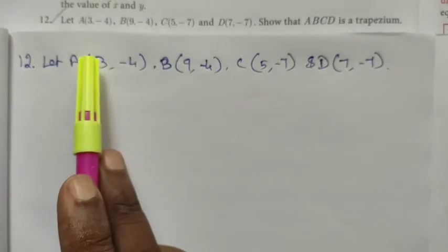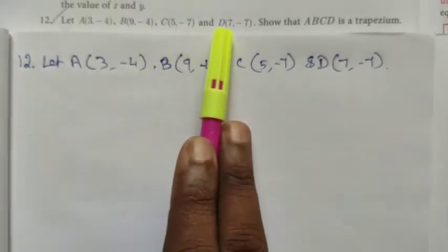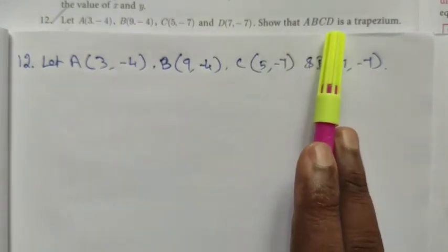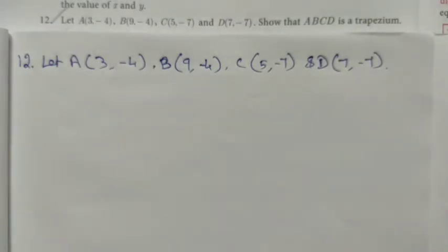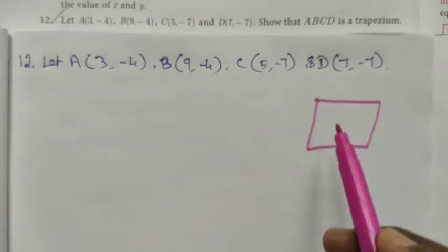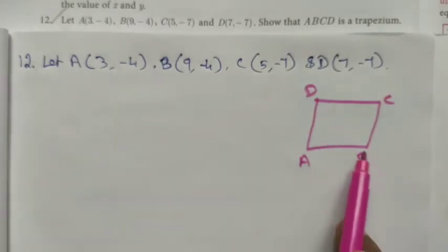Hi students, class 10, Exercise 5.2, question number 12. Let A, B, C, and D be given points. Show that ABCD is a trapezium. We know that a trapezium means one pair of opposite sides is parallel and the other pair of opposite sides is not parallel. Let me take the quadrilateral ABCD.